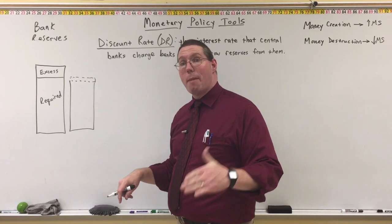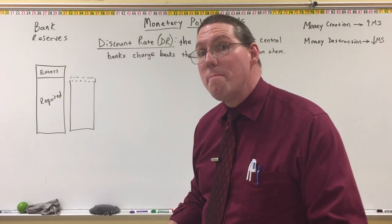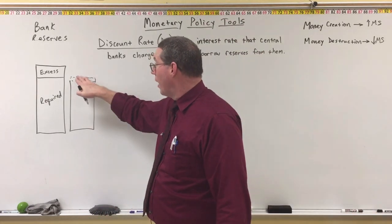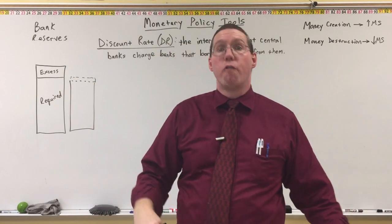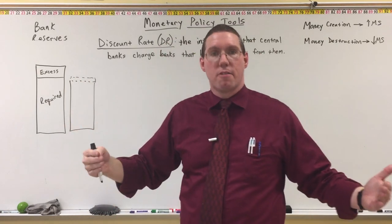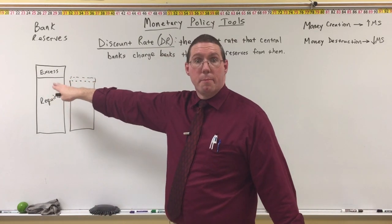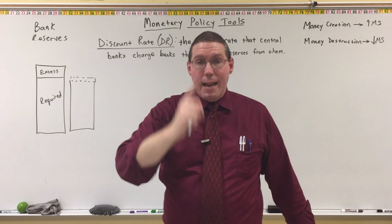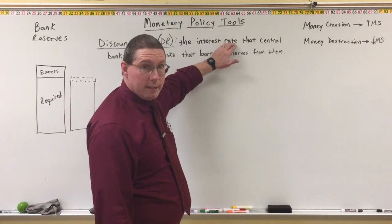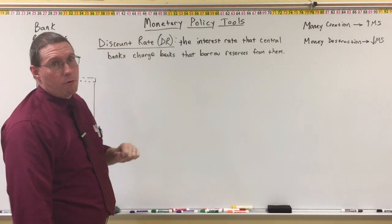One of the things a bank can do is borrow money from the Fed to cover their required reserves. They'll borrow the money overnight to make sure they cover their reserves, and then hopefully the next day they'll get all their deposits up to where they can cover their minimum requirement. When the Fed loans the bank money, the interest rate that the Fed charges that bank is called the discount rate.